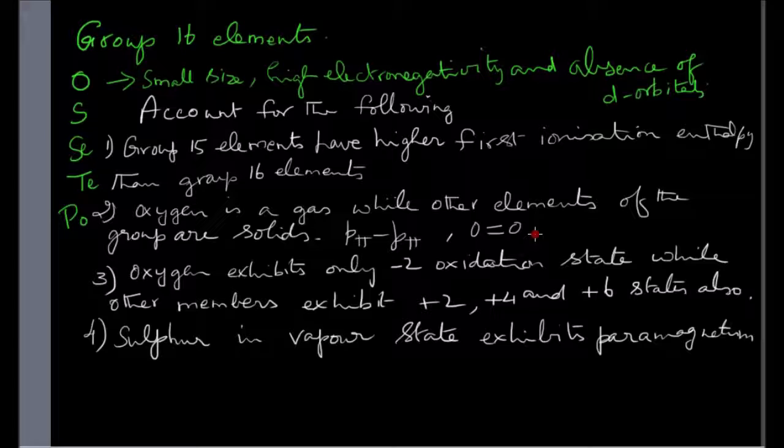Then oxygen exhibits only minus 2 oxidation state while other members exhibit plus 2, plus 4 and plus 6 states also. So oxygen being highly electronegative readily accepts two electrons to exhibit minus 2 oxidation state except in peroxides in which it exhibits minus 1 oxidation state.